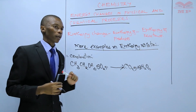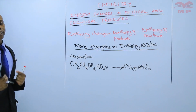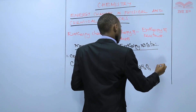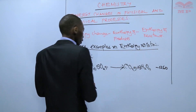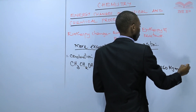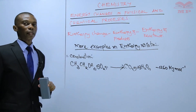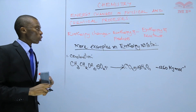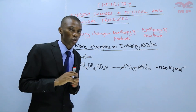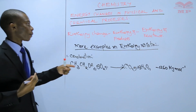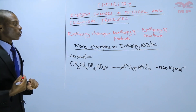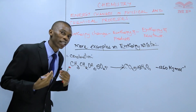When ethanol burns in oxygen, you get carbon dioxide and water. In this reaction, energy is lost to the surroundings. So we expect that the enthalpy change will be negative 1260 kilojoules per mole. That is our enthalpy change. This shows that when burning ethanol in air, 1260 kilojoules per mole of heat is lost to the surroundings.